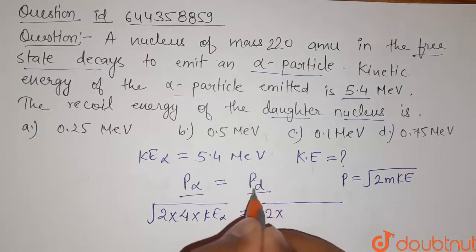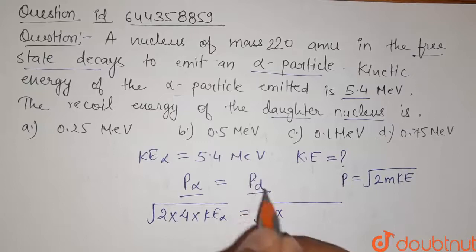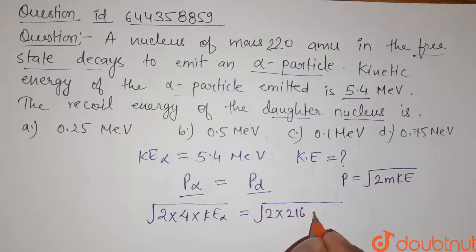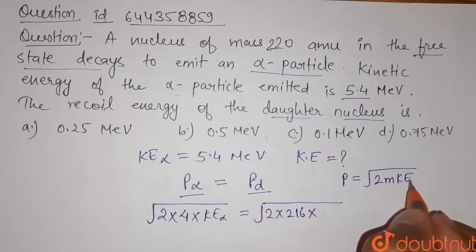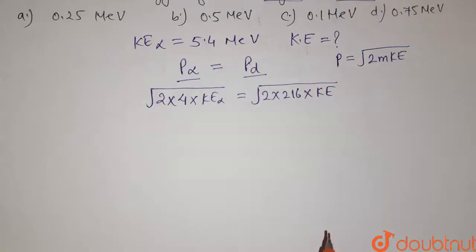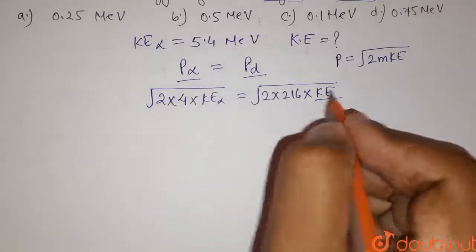This equals square root of 2 times the mass of daughter nuclei, which is 220 minus 4, so it will be 216, times the kinetic energy of daughter nuclei. Now solve this equation to find the value of KE.